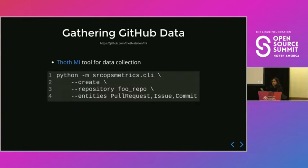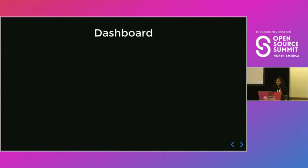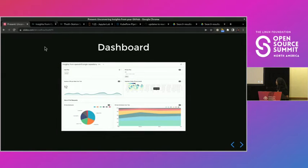For gathering the GitHub data, we use a project called MI, which is part of project Thoth — an open source project within our group at Red Hat. We use this tool to collect data from GitHub repositories of interest. It's available as a pip package. You can specify the GitHub repositories of interest, the features you want to collect like issues and pull requests, and the date range, and it provides you with a JSON-formatted dump. You can store this data on S3 storage and use it for model training and visualization.